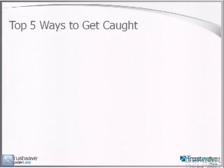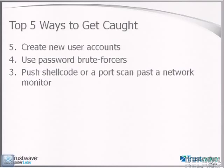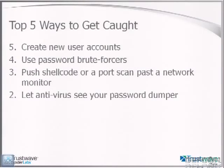To summarize real-world pen testing, here are my top five ways to get caught. Number five: create new user accounts — don't do it. Number four: use password brute forcers — great way to lock accounts and announce your presence. Number three: push shellcode or port scan past a network monitor, or use port scanning in general. Number two: let antivirus see your password dumper. Number one: crash your target. That's a common problem.